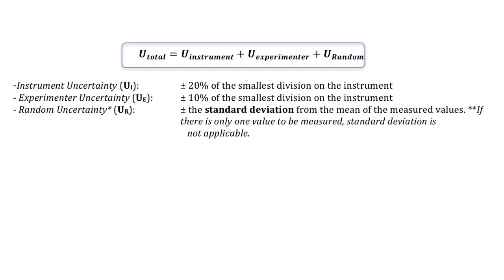Each individual quantity measured in an experiment should be expressed along with a range of uncertainty by adding the individual uncertainties involved in the collection of the data: namely, the inherent uncertainty of the instrument, which is primarily based on the instrument's precision; our own inherent uncertainty, which is primarily based on our ability to read or properly operate the instrument; and the random uncertainty that results from collecting multiple data points in an experiment — essentially the inability to arrive at the exact same value for a measurement made under the exact same conditions.